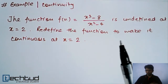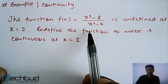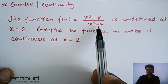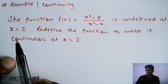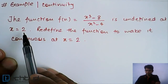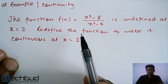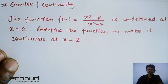The problem is: the function f(x) = (x³ - 8) / (x² - 4) is undefined at x = 2. We need to redefine the function to make it continuous at x = 2.